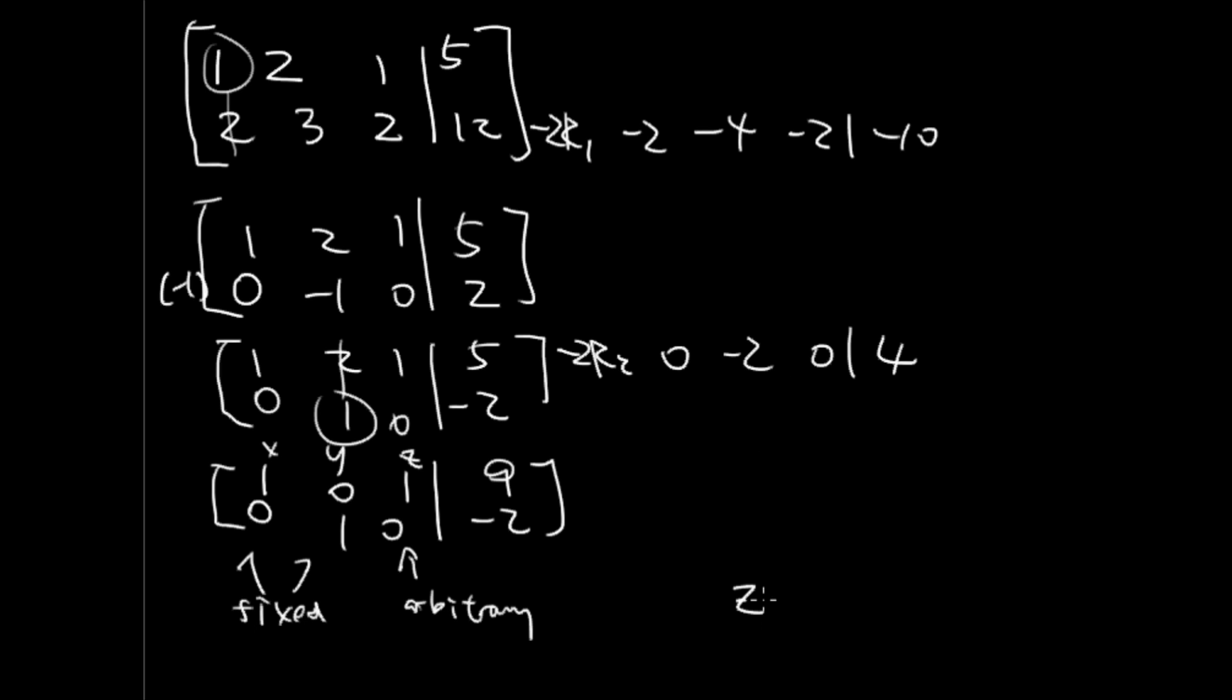So we have z equals z. Here we have y equals negative 2. That's what this equation says: 0x plus 1y plus 0z equals negative 2.